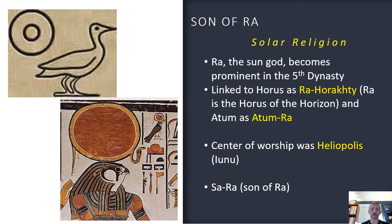Re-Horakhti is depicted as a falcon wearing a sun disk with a tiny uraeus on top. Get used to seeing this association with the king — and also get used to it changing, because we'll encounter two more significant religious changes: Amun and the Aten.